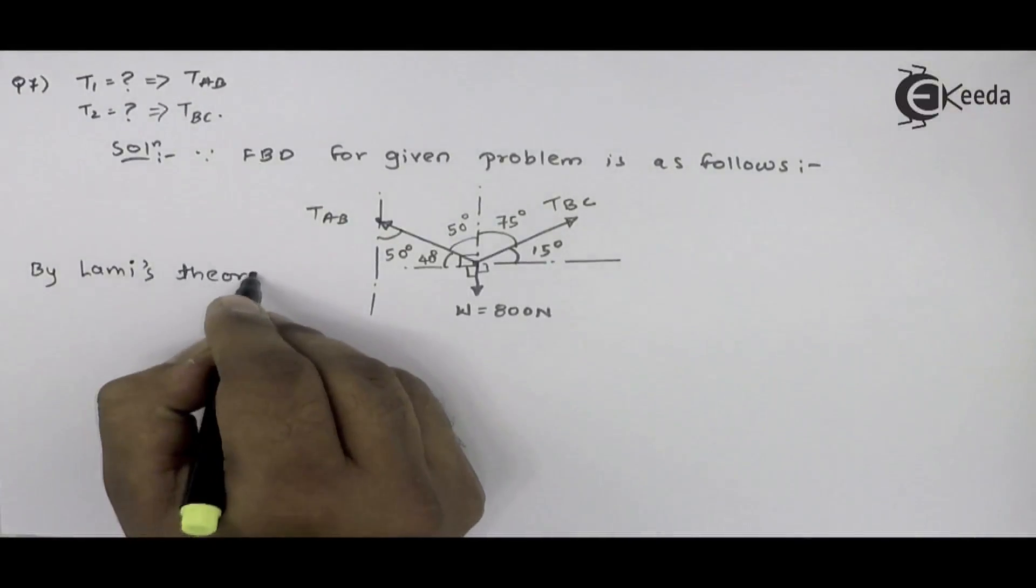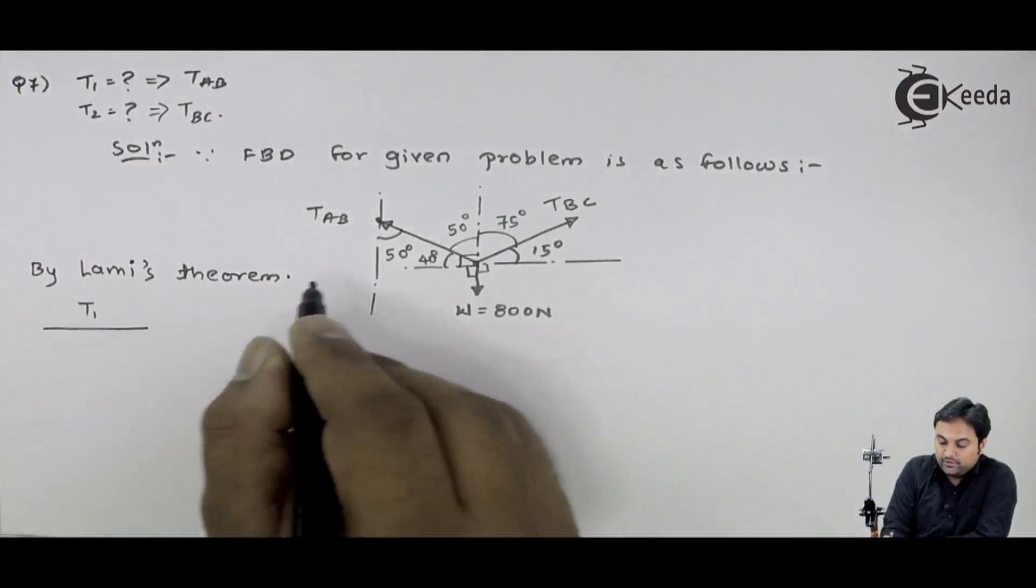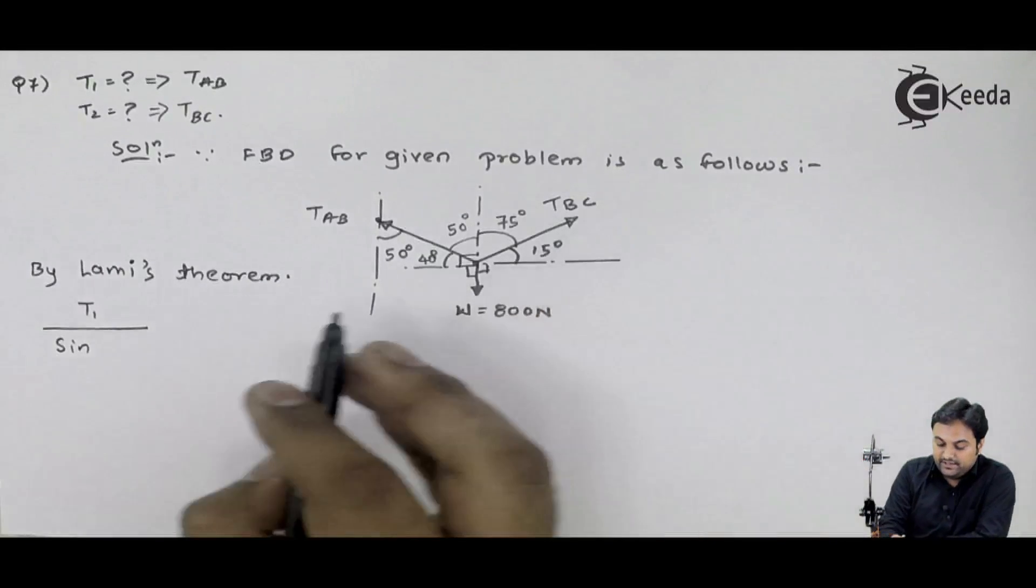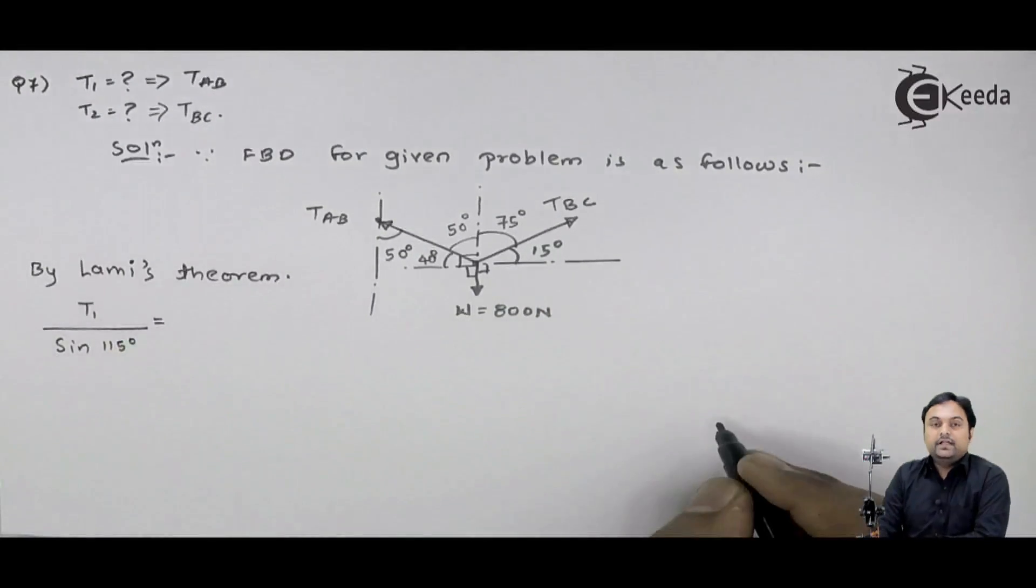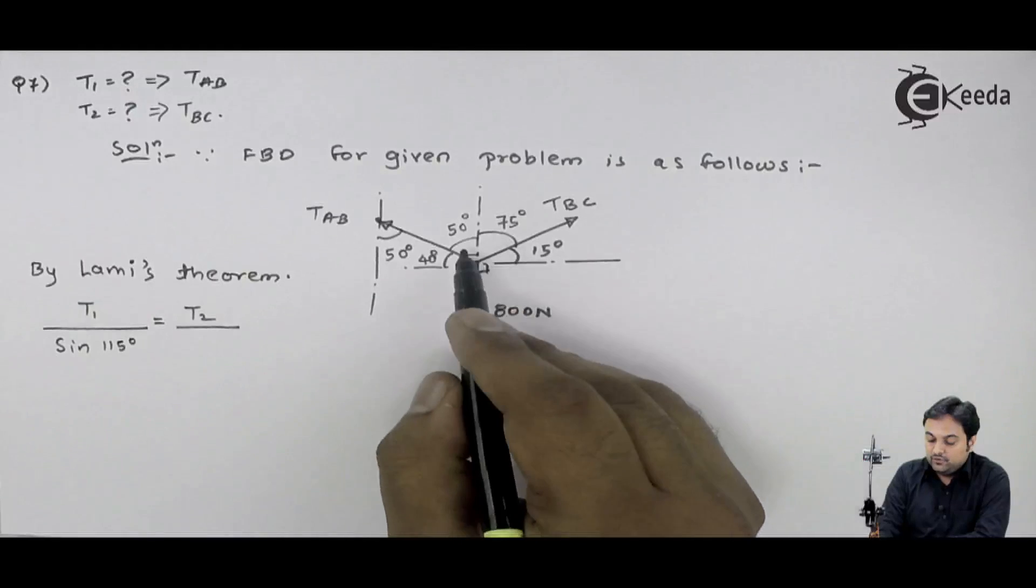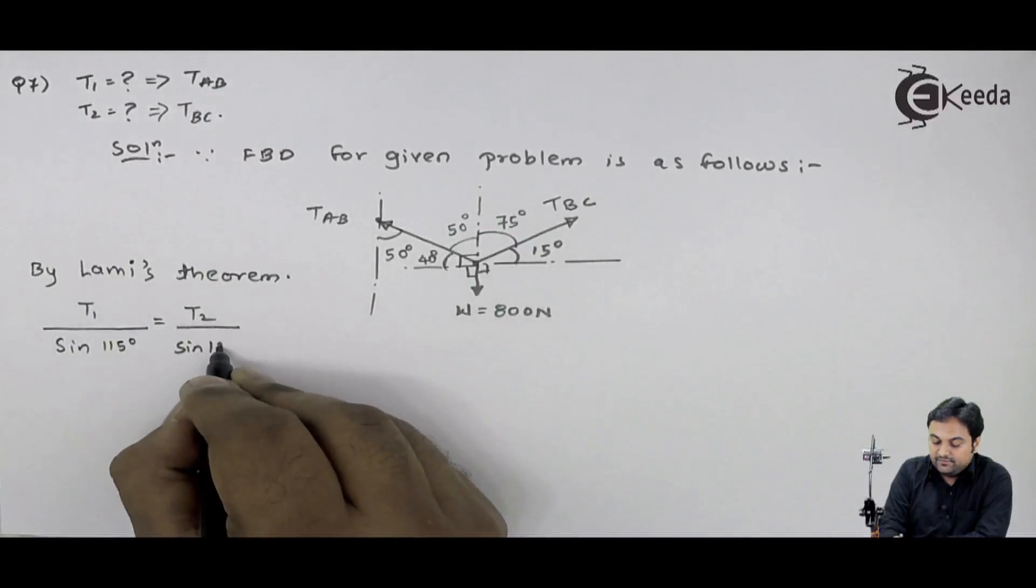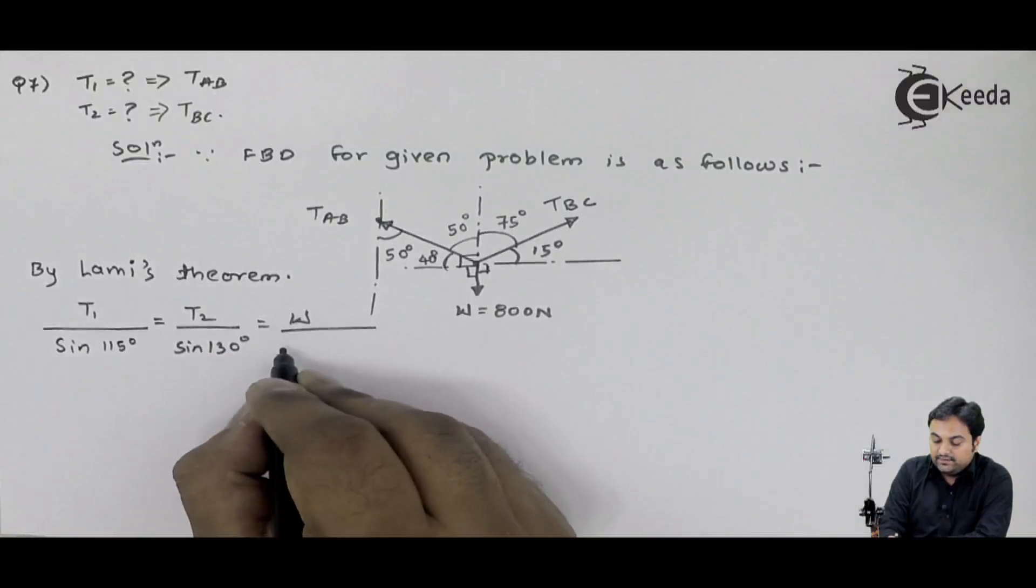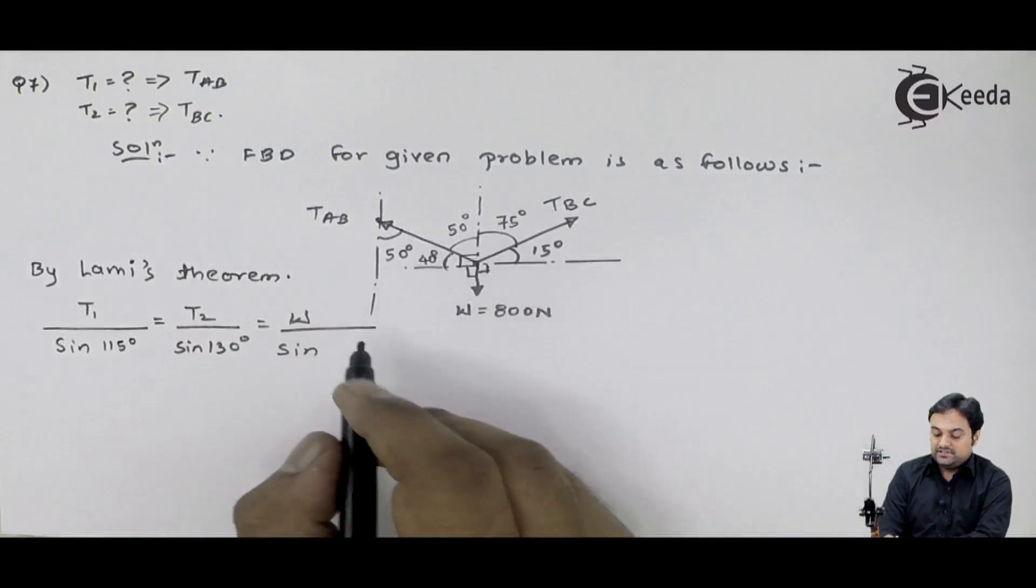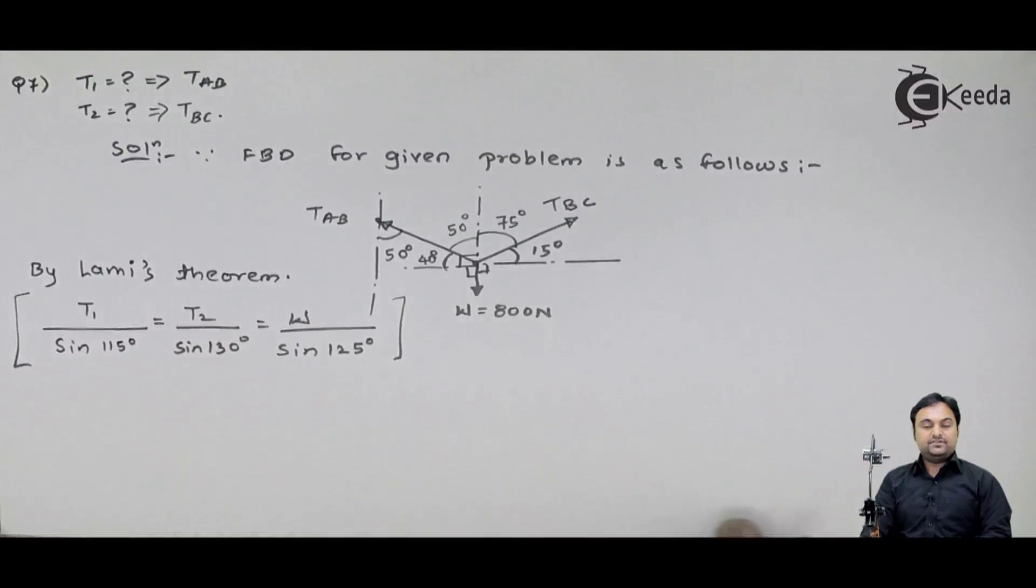I will write down TAB which is T1 upon sine of angle between TBC and W, it is 90 plus 15, which is 115 degree. Then I will write down TBC, which is T2 for me, angle between TAB and W, so this is 40 plus 90, that gives me 130 degree. At last, I have W upon sine of angle between TAB and TBC, means T1 and T2, 50 plus 75, that gives me 125 degree. So by Lami's theorem, I am getting this result.